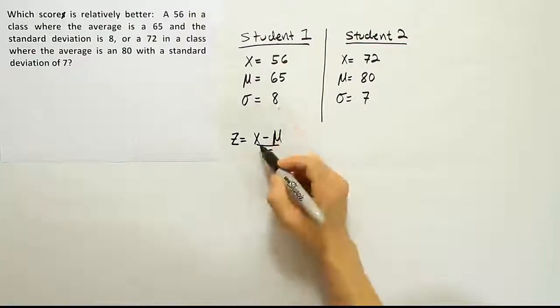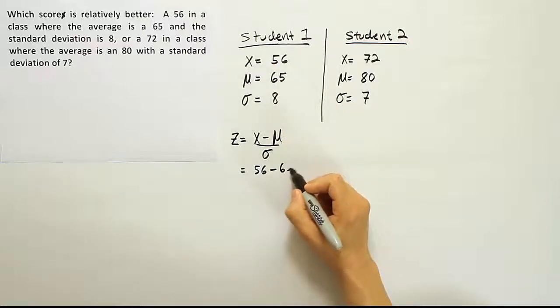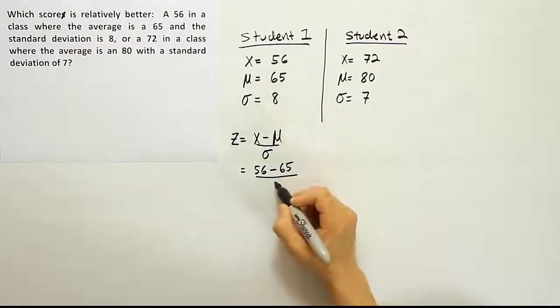So z equals x minus μ over σ. x is 56, minus the mean, that's 65, divided by the standard deviation of 8.